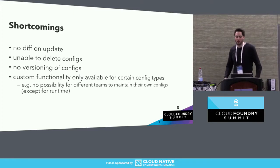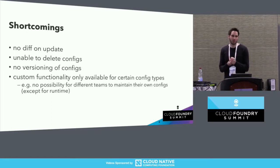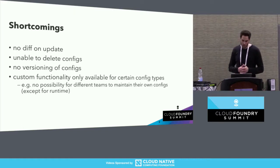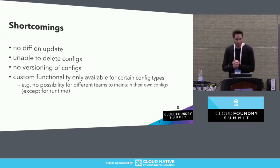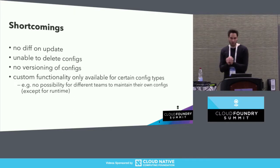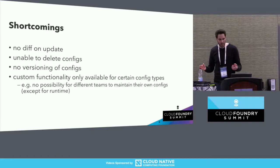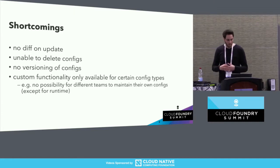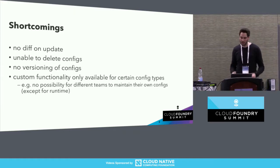Based on feedback from the BOSH community, we observed the following weaknesses of the current config approach. Originally, there was no diff on update, so when you updated the cloud config you didn't see a diff. Operators were unable to delete configs. There was no versioning, meaning you were unable to track how configs evolved, diff different versions, or switch back to previous versions. And there was custom functionality available only for certain config types — for example, splitting a config type into multiple named files was only available for the runtime config.